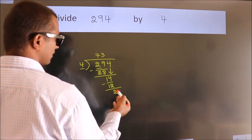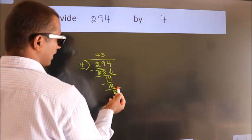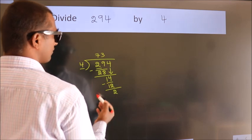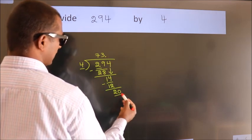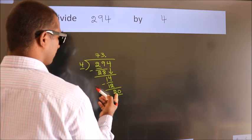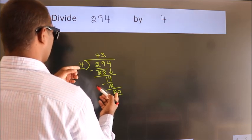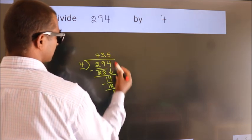After this no more numbers to bring down. So what we do is we put a dot and take 0. So 20. When do we get 20 in the 4 table? 4 times 5 equals 20.